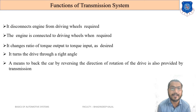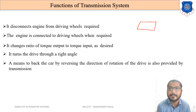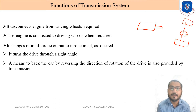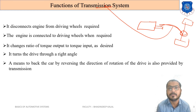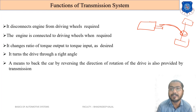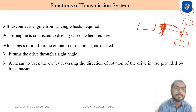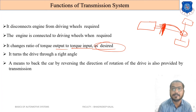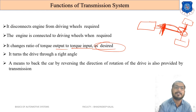The transmission system connects and disconnects the engine from the driving wheel when required. It also changes the ratio of output to input whenever required. The power coming from the engine in a longitudinal direction is turned through 90 degrees at the rear axle — the transmission system turns the drive through right angles.